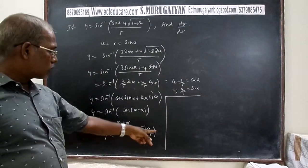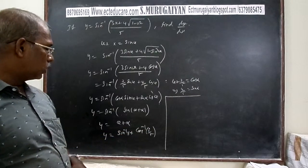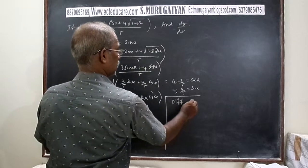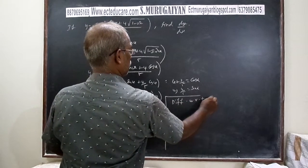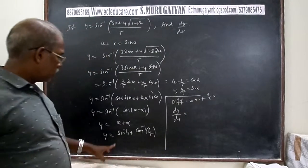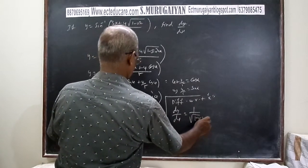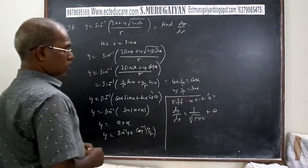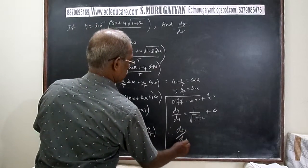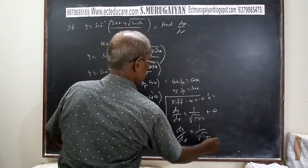Differentiating y = sin⁻¹(x) + cos⁻¹(3/5) with respect to x: the derivative of sin⁻¹(x) is 1/√(1 - x²), and the second term is a constant so its derivative is 0. Therefore dy/dx = 1/√(1 - x²).